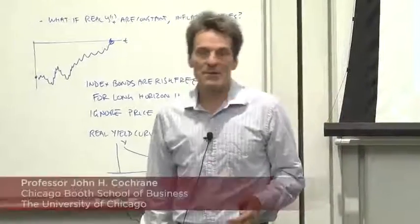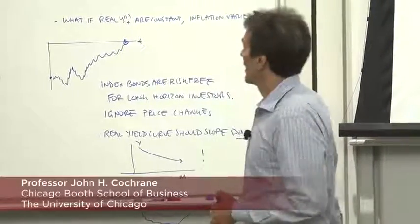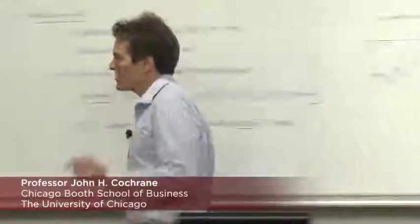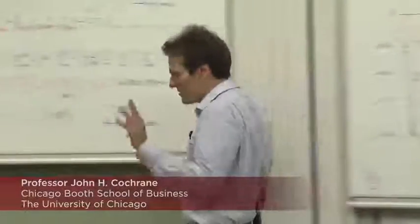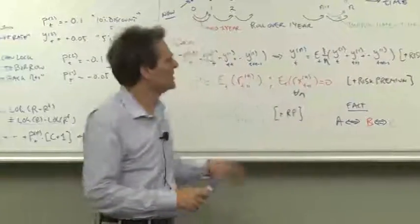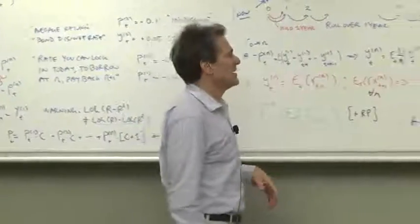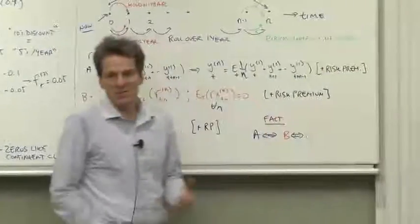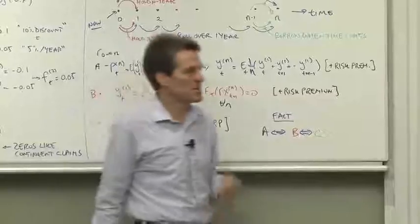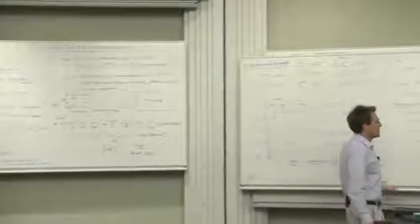So let's start thinking about risk premiums in the term structure. Our expectations hypothesis model was about risk neutral thinking, but clearly we had risk premiums. What should those risk premiums be? What do we expect for those things? So let's think about that.